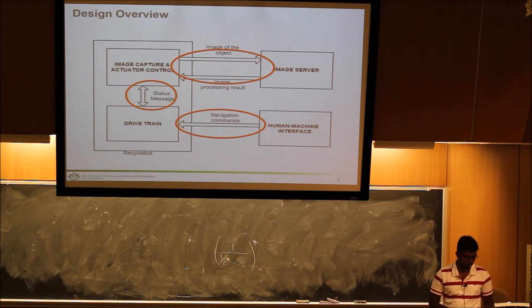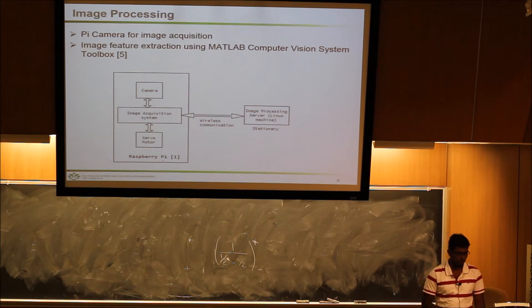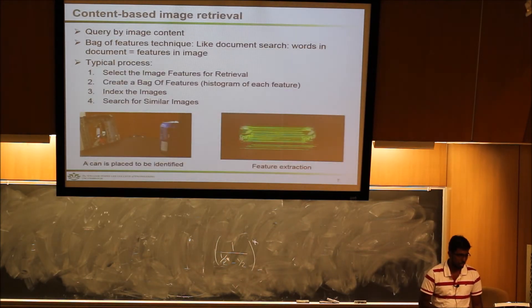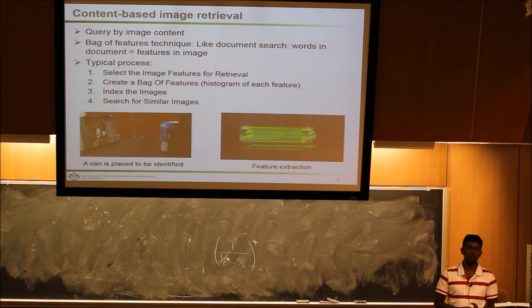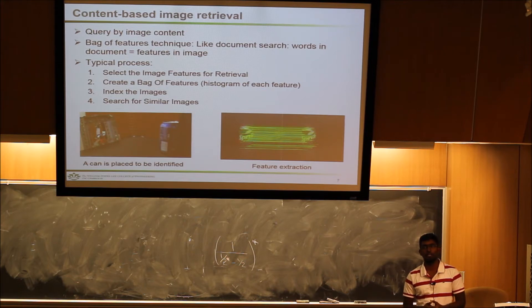We use a Pi camera to capture the image, and for feature extraction from the images we used the MATLAB Computer Vision Toolbox. The image processing technique we use is called content-based image retrieval. We feed the MATLAB process with data, with several images of recyclable objects.